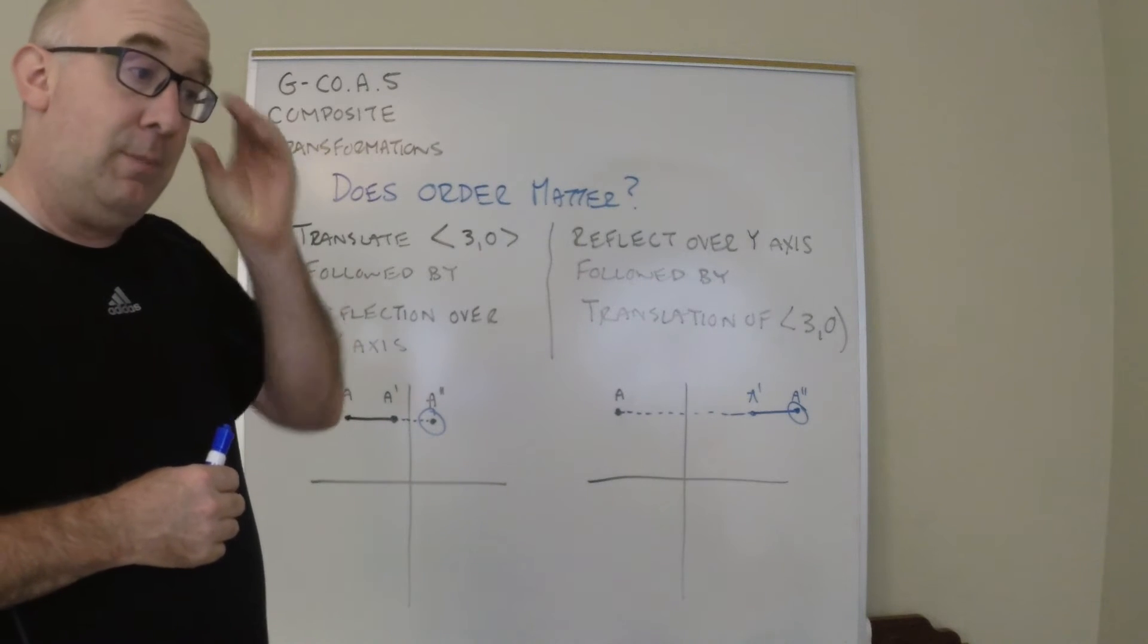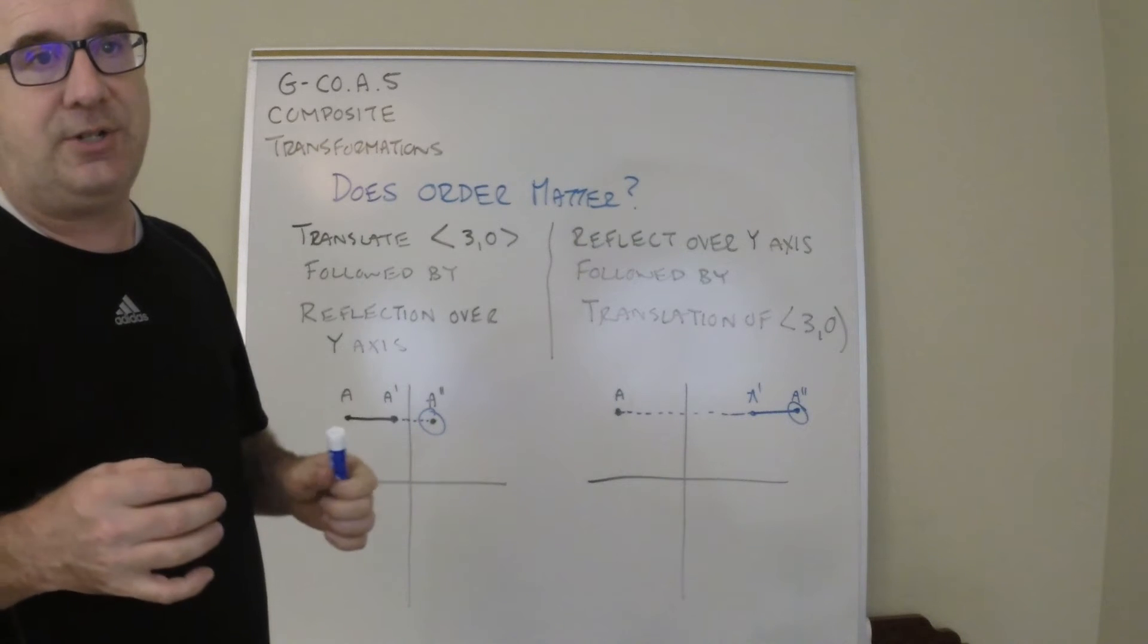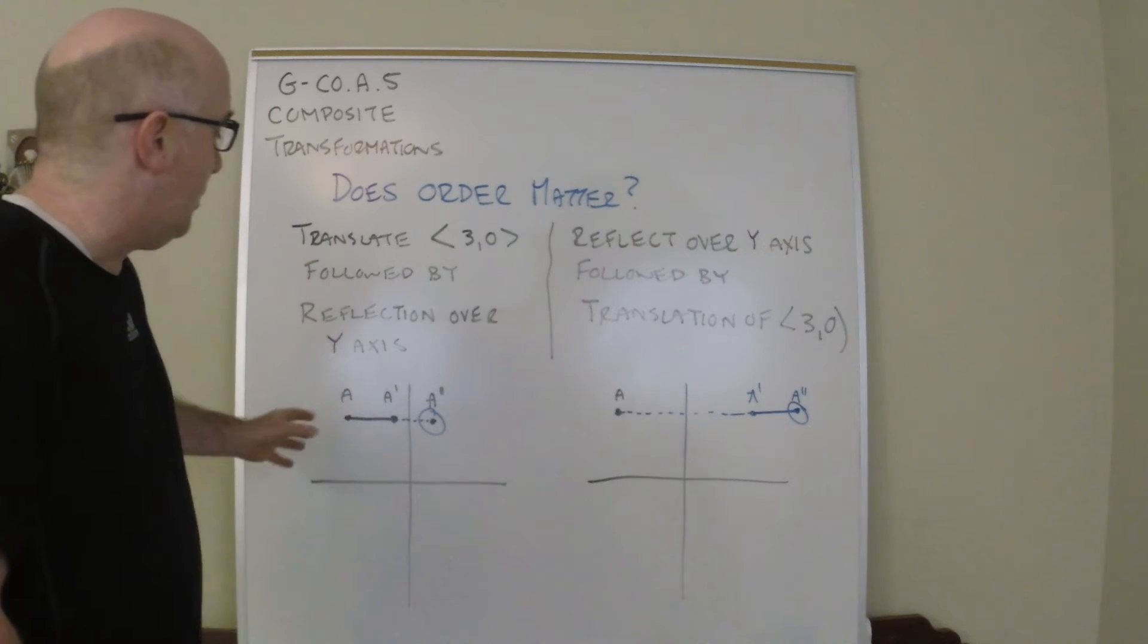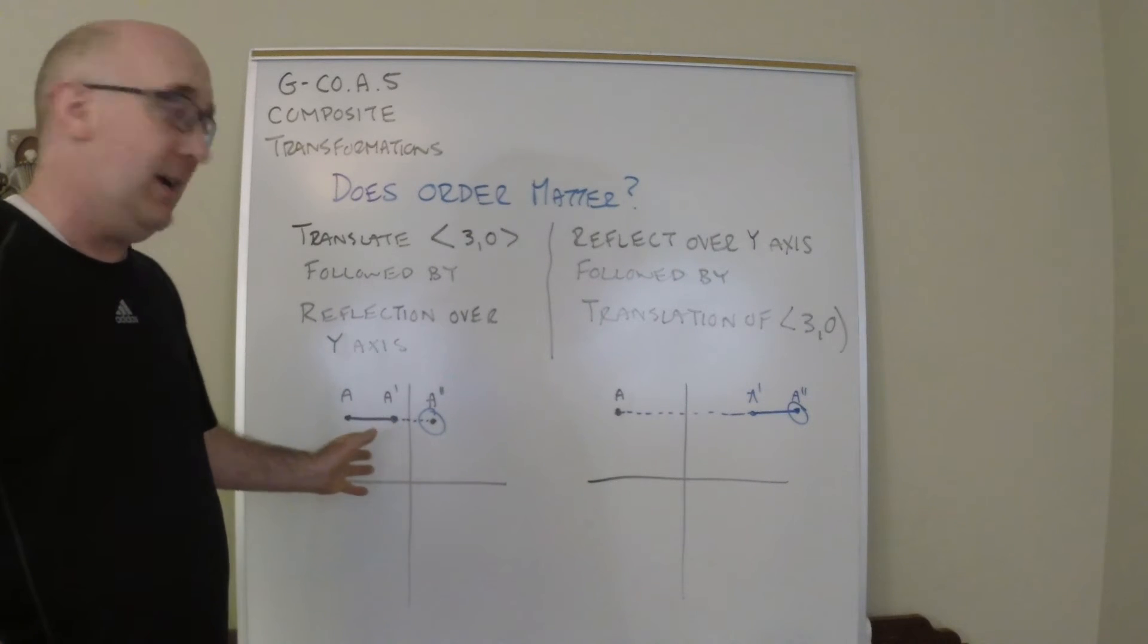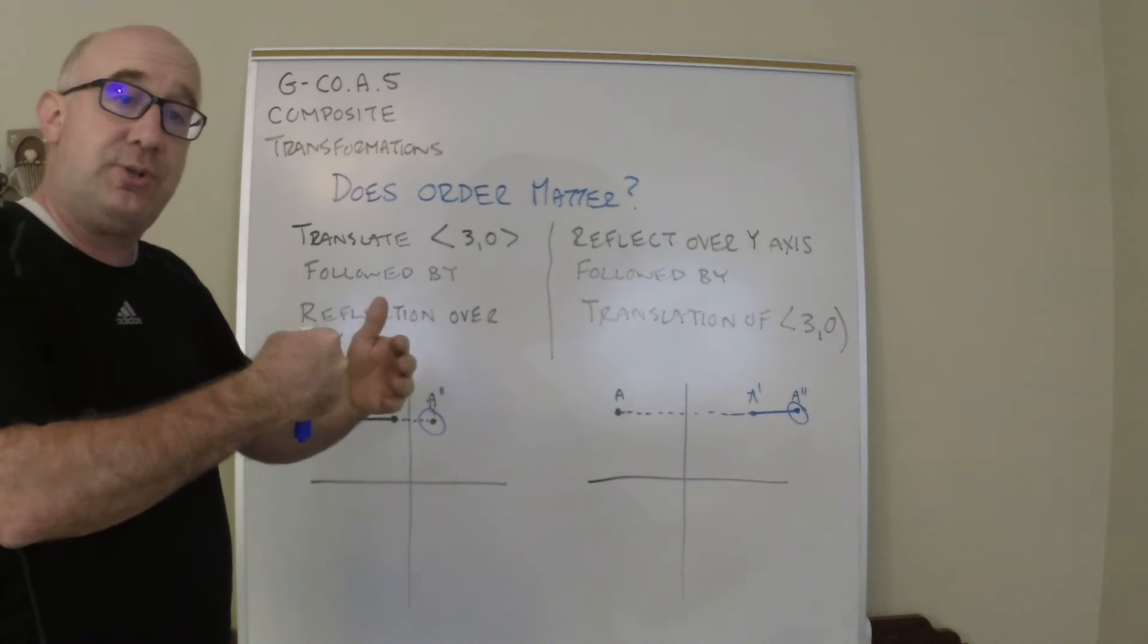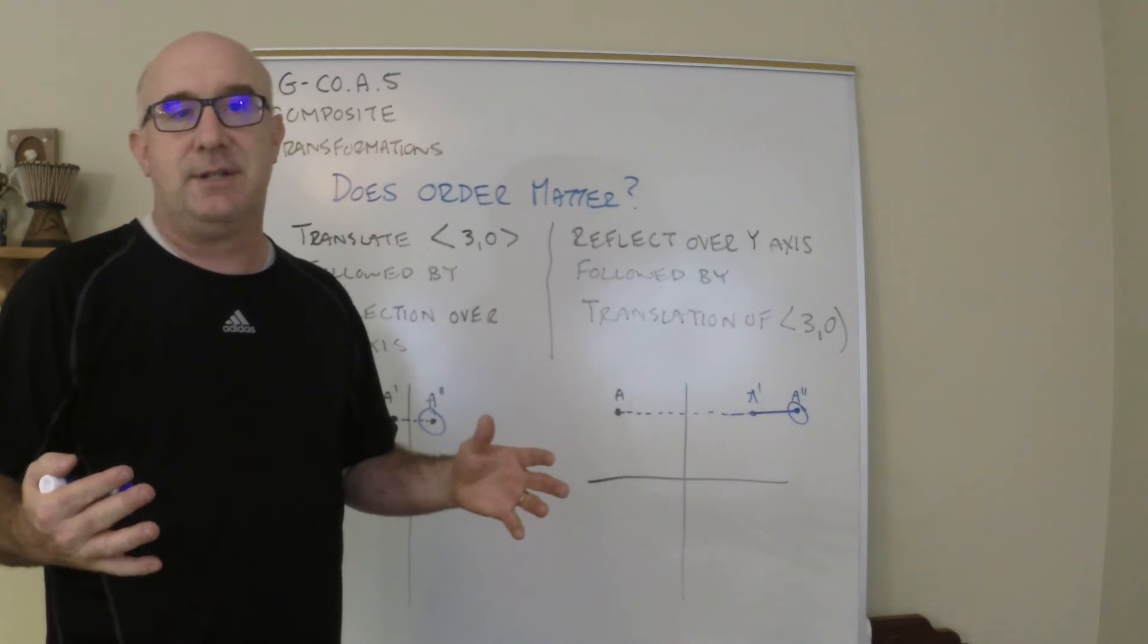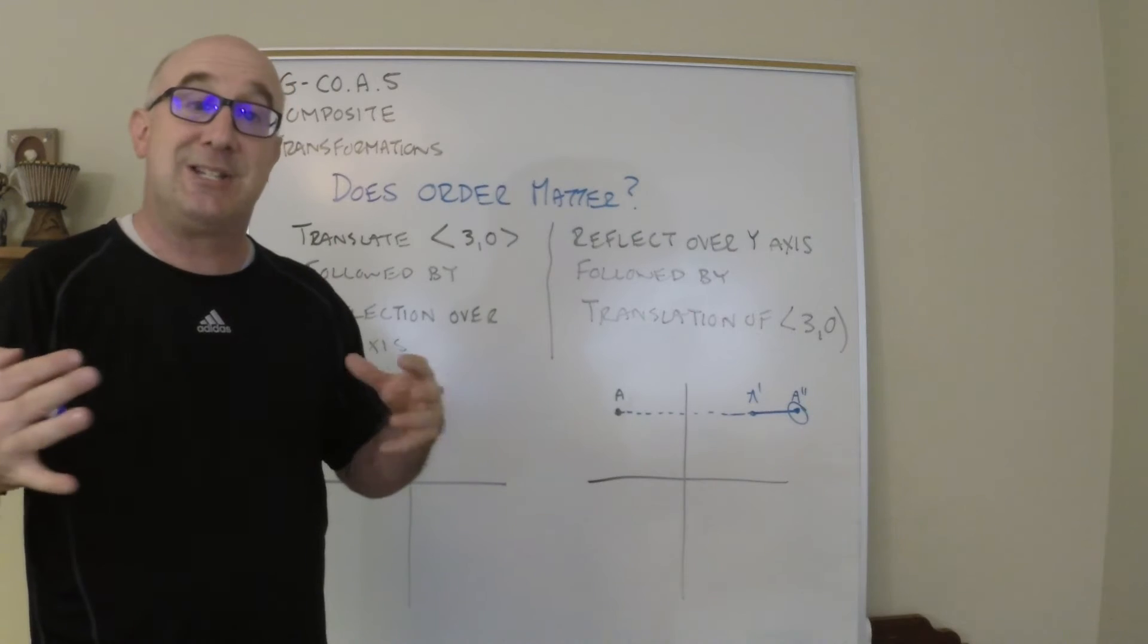I mentioned sometimes it doesn't matter. The reason it doesn't matter sometimes is when you're performing transformations that do not reference a location or a line in the plane. The reason why these things matter is because the line is a fixed area, and so by the way you translate, you're either getting closer to the line or further away from that line. If you were to do two translations, for instance, it wouldn't matter the order because there's no reference point that's locked into place.